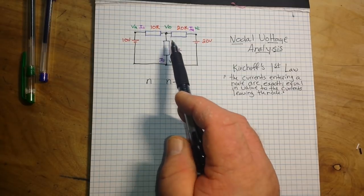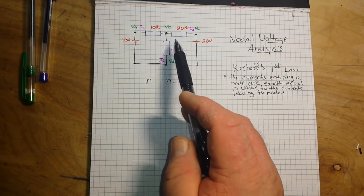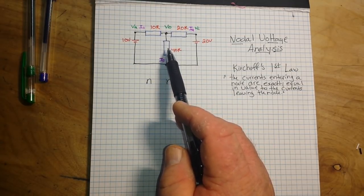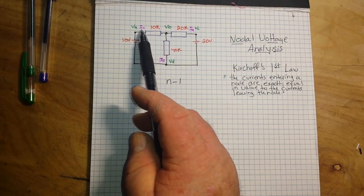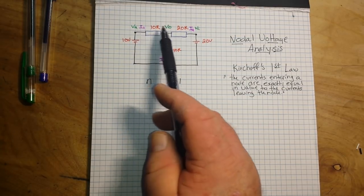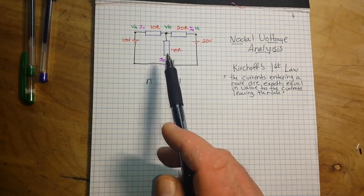We have three resistors: 10 ohm, 20 ohm, and a 40 ohm. And we have our currents I1, I2, and I3.